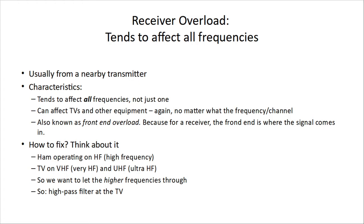It's also known as front-end overload because for a receiver, the front-end is where the signal comes in. To fix this: your ham radio is operating on HF — higher frequencies — while the TV is on VHF and UHF. So we want to let the higher frequencies through and kill the lower frequency stuff coming out of our transmitter. We use a high-pass filter at the TV, meaning it will pass the high frequencies and drop the lower ones.